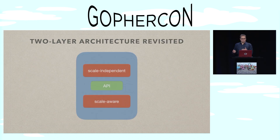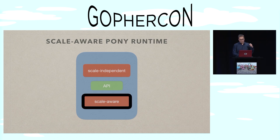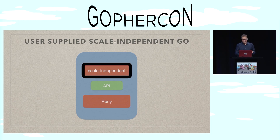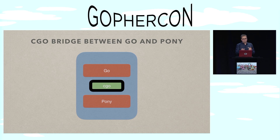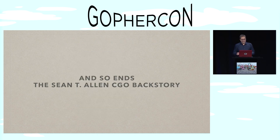So if we look at this two-layer architecture: the scale-aware portion is the Pony code, and the scale-independent portion is our Go code. The API bit is where the CGo is, and that's really the part I'm going to be talking about for the rest of this — what happens in the CGo bit, how can we bridge between the Go code and the Pony code, and what are the problems you can run into if you're trying to do this sort of thing. And that really ends my CGo backstory.